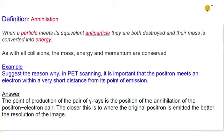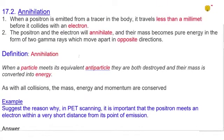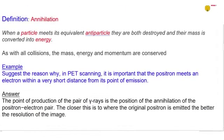As with all collisions, the mass energy is conserved as well as the momentum. This is a question that suggests the reason why in PET scanning, it is important that the positron meets an electron within a very short distance from its point of emission. This is because the point of production of the pair of gamma rays is the position of the annihilation of the positron-electron pair. So the closer this is to where the original positron is emitted, the better the resolution of the image.